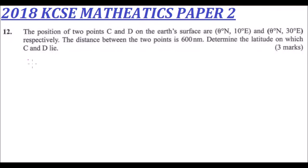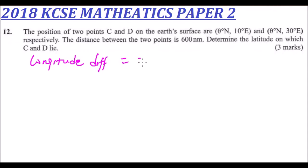To do this question, we need to find the longitude difference. The longitude difference is equal to 30 minus 10, which gives us 20 degrees.